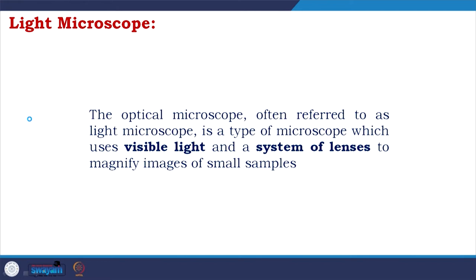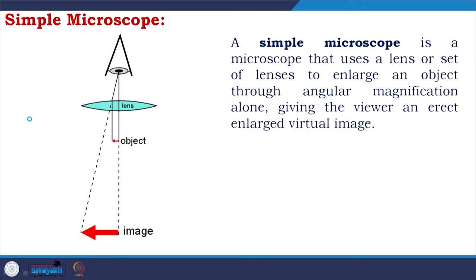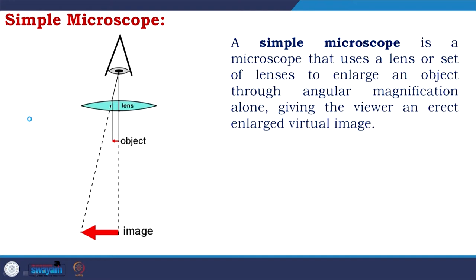A light microscope, often referred to as an optical microscope, is a type of microscope that uses visible light and a system of lenses to magnify images of small samples. A simple microscope uses a lens or set of lenses to enlarge an object through angular magnification alone, giving the viewer an erect, enlarged virtual image. This is still found in simple magnification devices such as magnifying glasses and eyepieces for telescopes and microscopes.